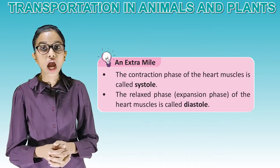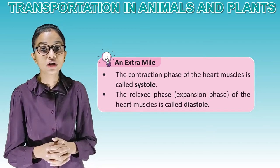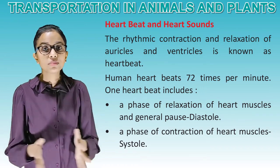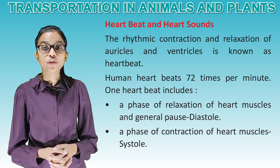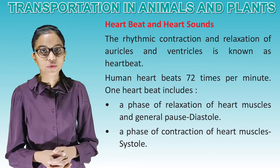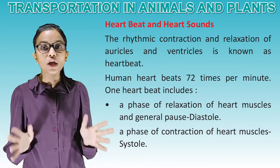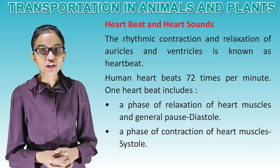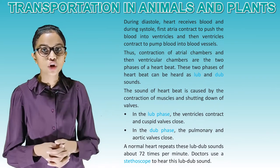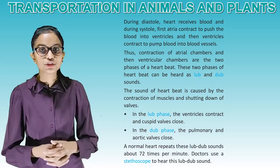The contraction phase of the heart muscles is called systole. The relaxation or expansion phase of the heart muscles is called diastole. Heartbeat: the rhythmic contraction and relaxation of auricles and ventricles is known as heartbeat. The human heart beats 72 times per minute. One heartbeat includes a phase of relaxation called diastole and a phase of contraction called systole. During diastole, the heart receives blood, and during systole, first atria contract to push the blood into ventricles, and then ventricles contract to pump blood into blood vessels.